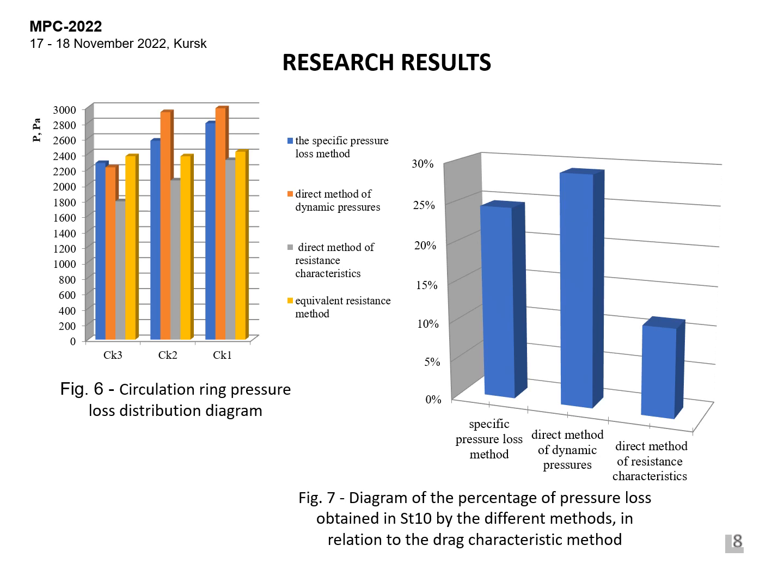According to the results of the forward and reverse hydraulic calculation methods for one of the branches of the heating system, we have obtained the pressure losses of the main and secondary rings, as well as the distribution of flow rates across the risers. Let us present the results of the calculations in the form of diagrams in figures 6, 7, and 8. The main circulation ring CK1 and the two secondary rings CK2 and CK3 pass through riser 10 and riser 8 respectively. Taking the direct method of resistance characteristics as the basic method, we express the deviation of the obtained pressure losses by other methods in riser 10 in percent.